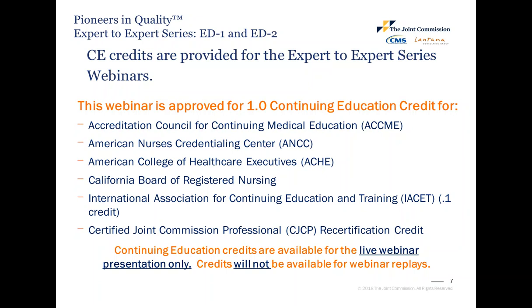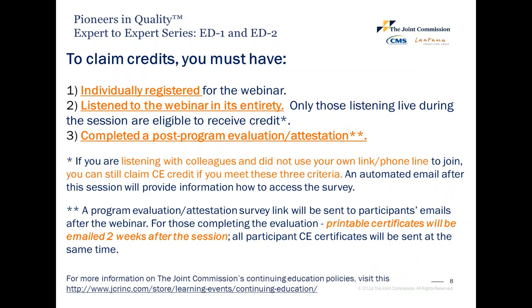CE credits are offered for all our Pioneering Quality webinars. This webinar is approved for one continuing education credit for Accreditation Council for Continuing Medical Education, American Nurses Credentialing Center, American College of Healthcare Executives, California Board of Registered Nursing, International Association for Continuing Education and Training, and Certified Joint Commission Professionals Recertification Credit. CE, CME, and CEU credits are available for the live audio only. Credits will not be available for webinar replays. To claim credit, you must have individually registered for the webinar and listened to the live webinar in its entirety. Completed a post-program evaluation. The program evaluation link will be sent to participants' emails after the webinar. Printable certificates will be sent via email two weeks after the session.